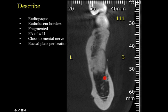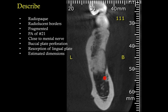The buccal plate has eroded — the lesion has perforated through the buccal plate, as we can see right here — and it is starting to resorb the lingual plate. We're seeing small radiolucent lesions in the lingual cortical bone, showing that this lesion appears to be in the process of perforating the lingual plate as well.